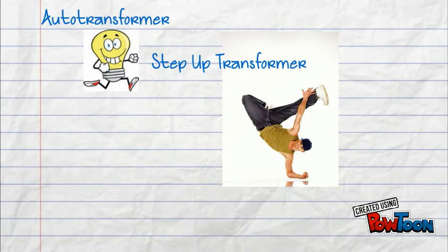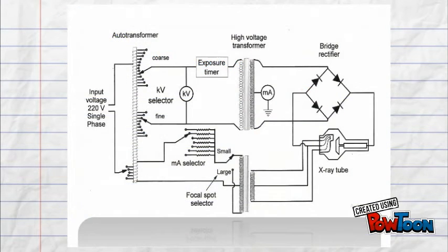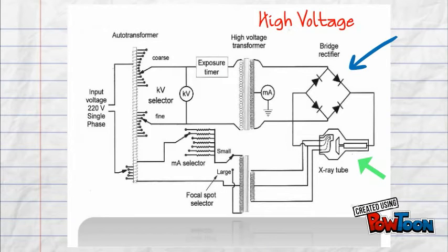Now we're moving on to the secondary high voltage side of the circuit. On the high voltage side, the electricity has a decreased output and an increased voltage. This travels through the four diode rectification circuit and then into the X-ray tube on the anode side.